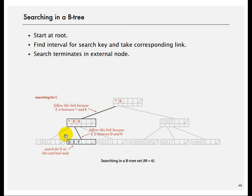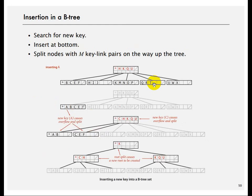For insertion: search for a new key, insert at the bottom, and split nodes with m key-link pairs on the way up. For example, if you have b, c, e, n, f and you try to insert e, you temporarily insert it but the node is now overfull. So you split it in half — you get a, b, c and then f — and you move c up.